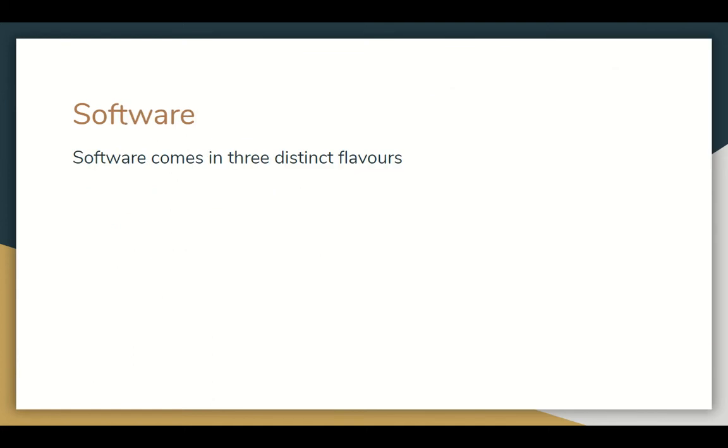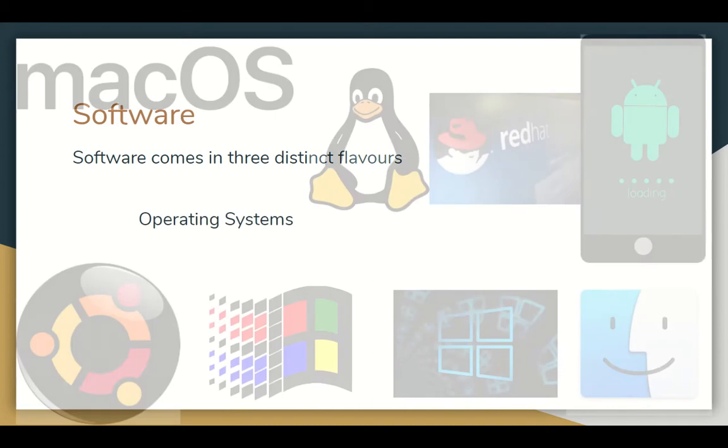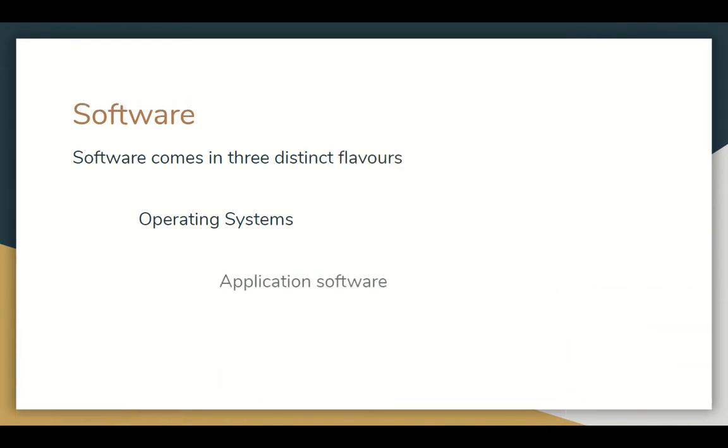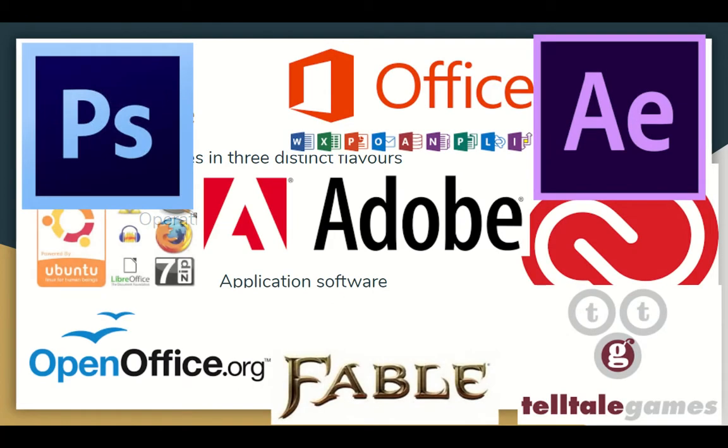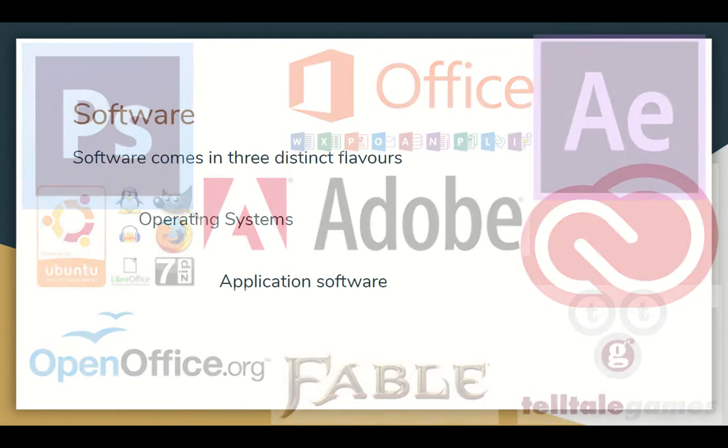There is also software. Software comes in three distinct flavors. First up is operating systems. Now, a list of all these operating systems here: we have macOS, Android, Linux, whatever. Then there's application software. This includes your office productivity, your games and everything in between.